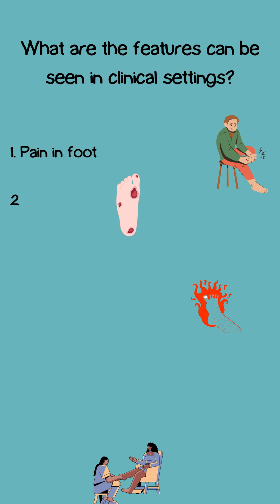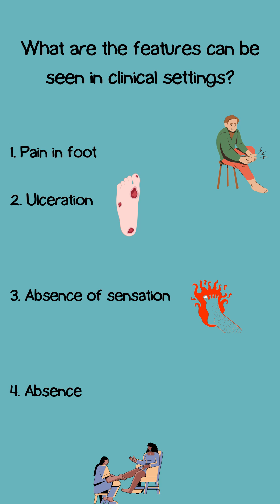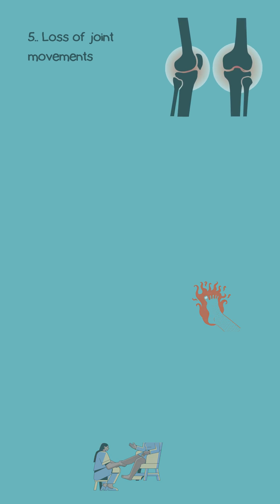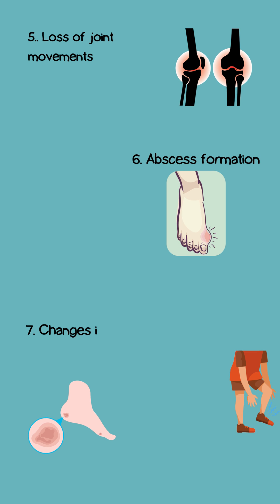Clinical features seen in clinical settings: 1) pain in foot; 2) ulceration; 3) absence of sensation; 4) absence of pulsations in the foot — posterior tibial and dorsalis pedis arteries; 5) loss of joint movements; 6) abscess formation; 7) changes in temperature and color if gangrene is present.